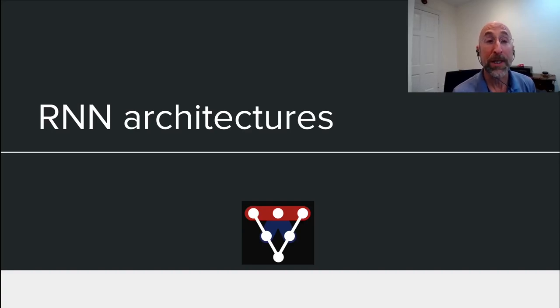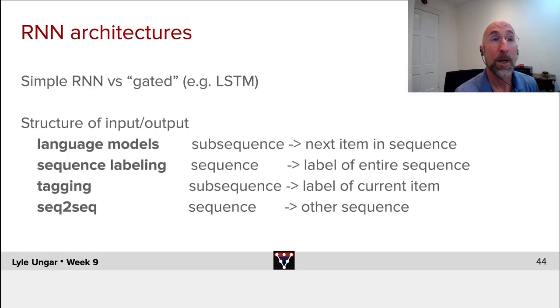We now turn to looking at some of the different RNN architectures that are used, particularly for natural language processing. One choice is whether to use a simple RNN or something that is a gated recurrent network, such as an LSTM.